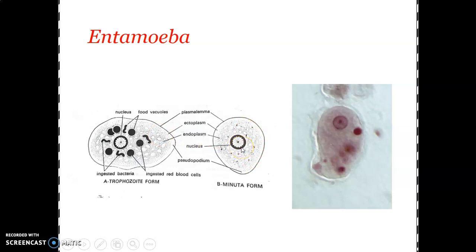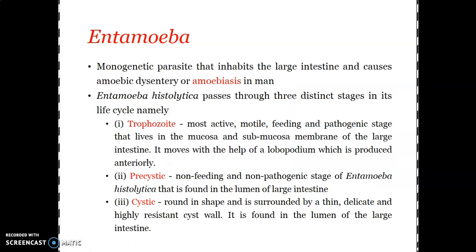These are the two different forms in which Entamoeba histolytica exists. The next topic is the life cycle, which will be dealt with in the coming presentation. To summarize, there are three different stages: the trophozoite, which is the most active, motile, feeding, and pathogenic stage living in the mucosa and submucosal membrane of the large intestine, moving with the help of a lobopodium — a monopodial pseudopodium.